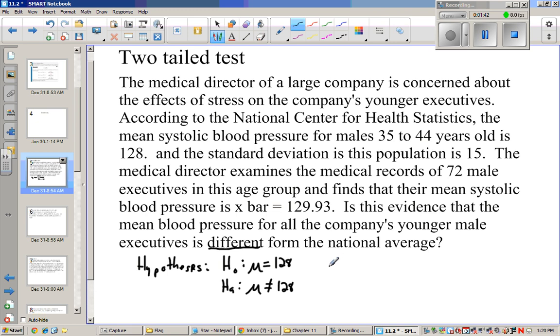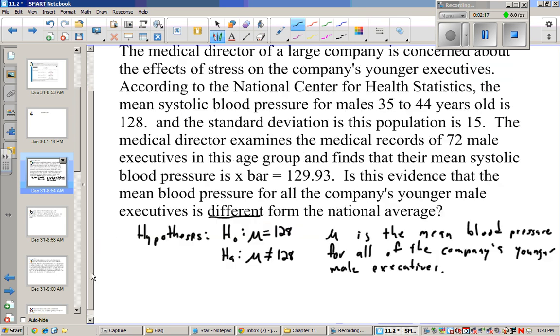Remember, we have to define what μ is. μ is the mean blood pressure for all of the company's younger male executives. So if you took all of them, that would be the true mean of all of them.